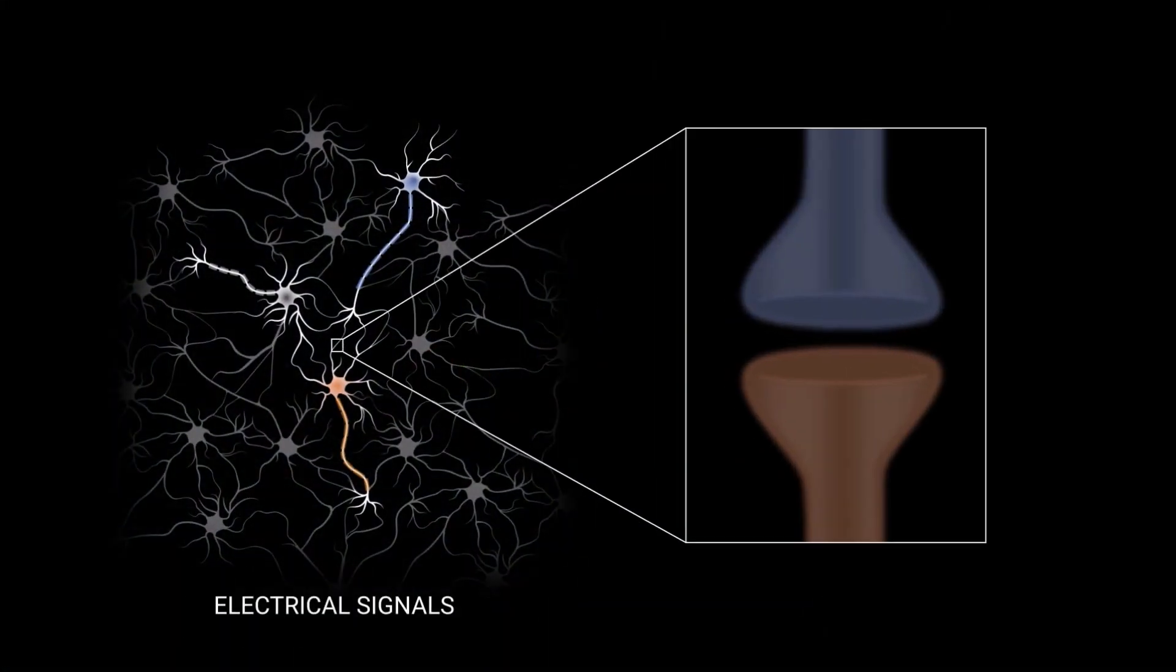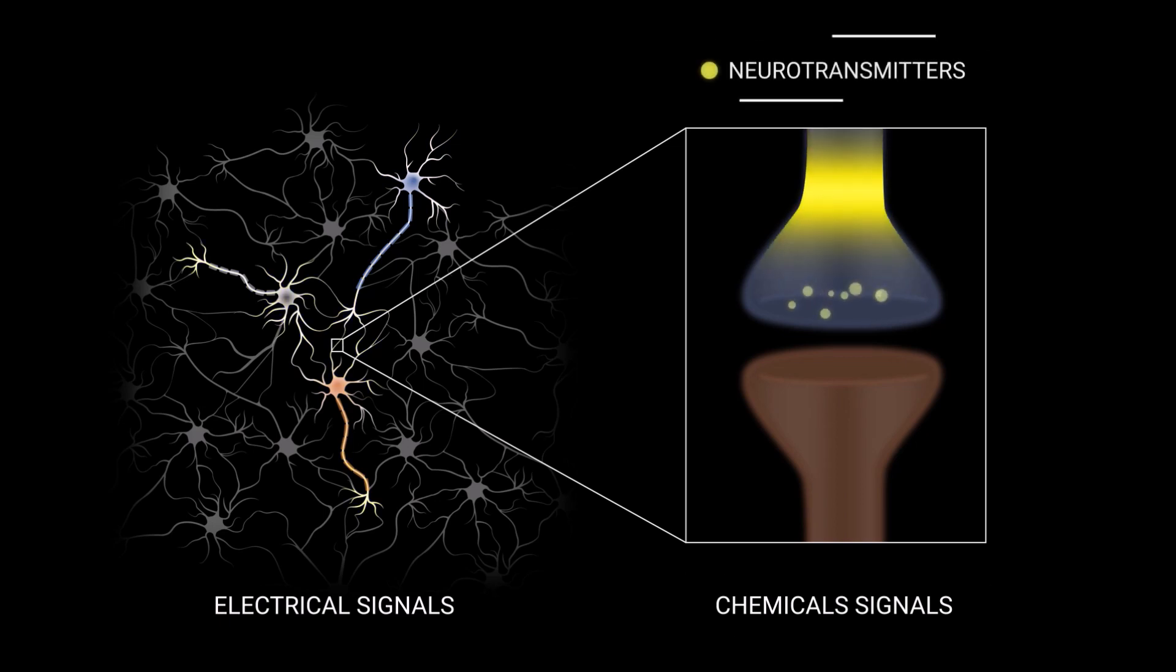Synapses are a combination of electrical and chemical signals between the neurons that transmit information and are essential for every process in the body.